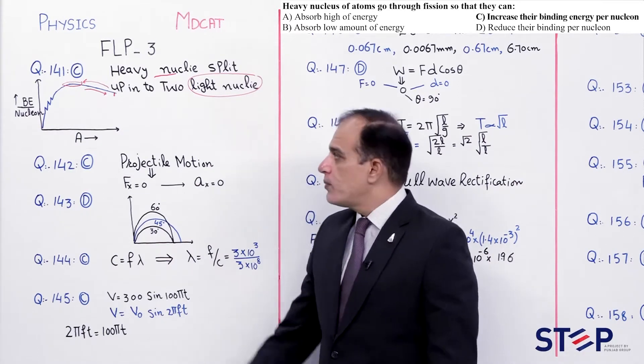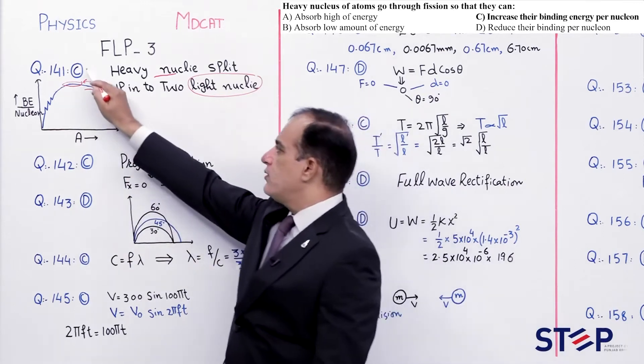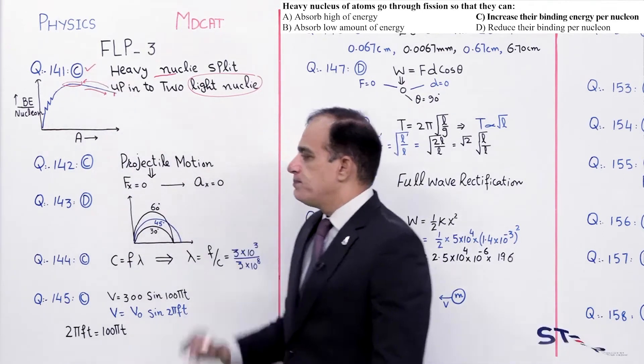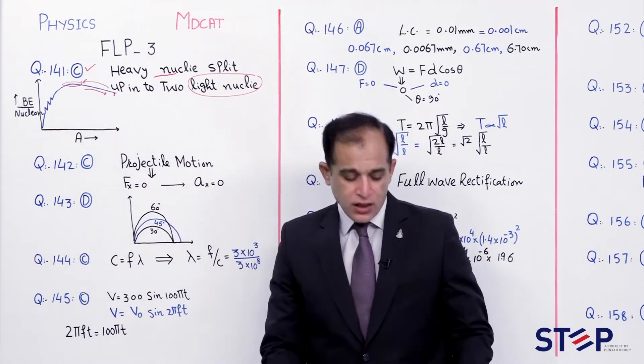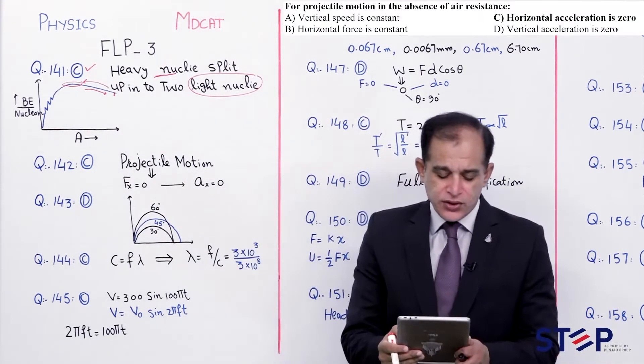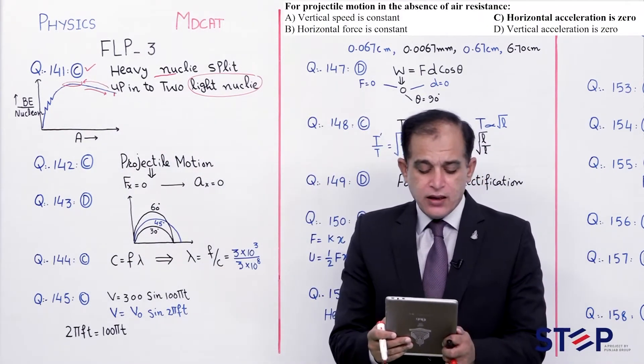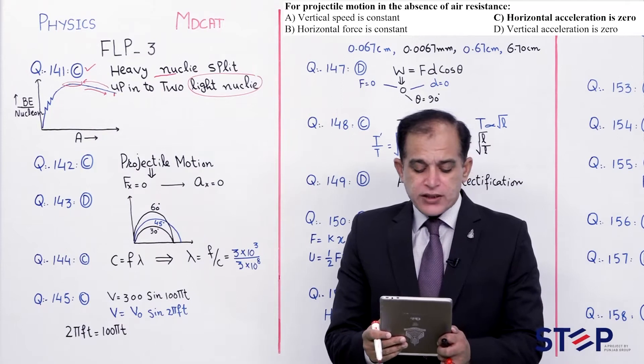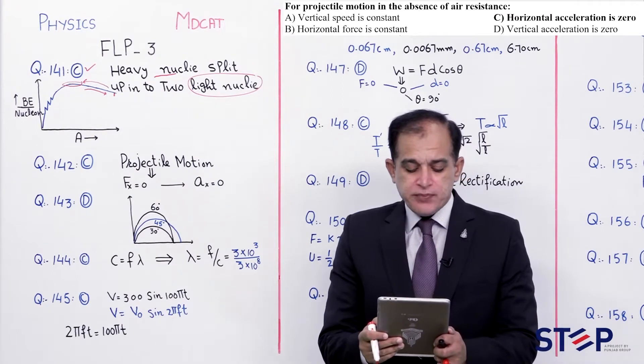Jab ek heavy nucleus split hokar do light nuclei mein convert karega, wahan par binding energy per nucleon pehle se zyada ho chuki hogi. Toh correct option hai Charlie.